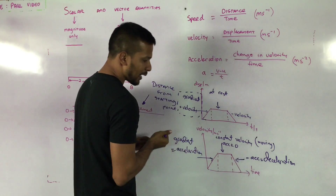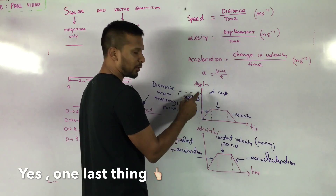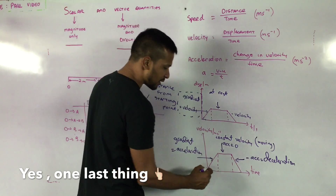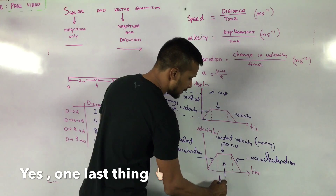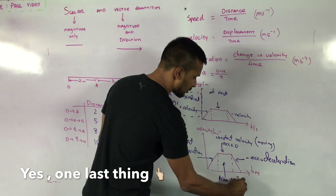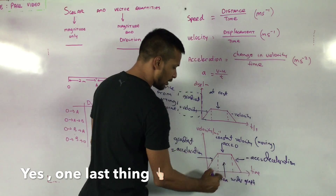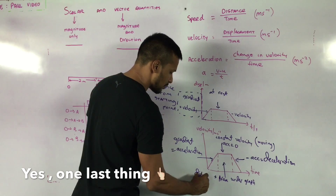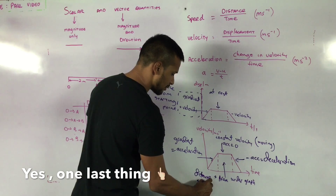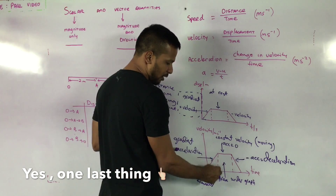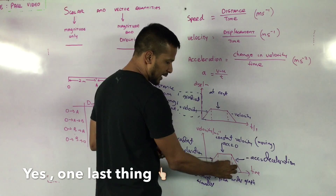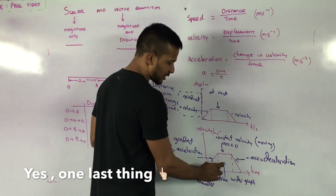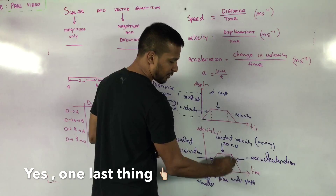So for a velocity-time graph: gradient gives acceleration; horizontal line means no acceleration (constant velocity); negative gradient means deceleration. One more important point: if I wanted to find displacement after a period of time on a displacement-time graph, I simply read off the value. But on a velocity-time graph, if I want to find distance travelled, I find the area under the graph. The area under the velocity-time graph gives the displacement or distance travelled — whether for a specific period or the whole journey.